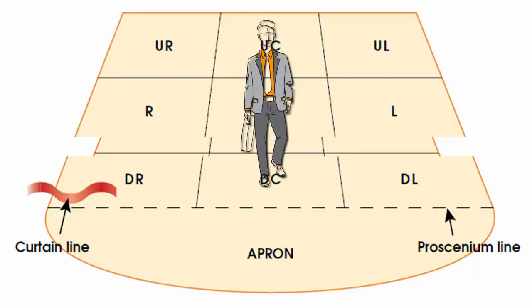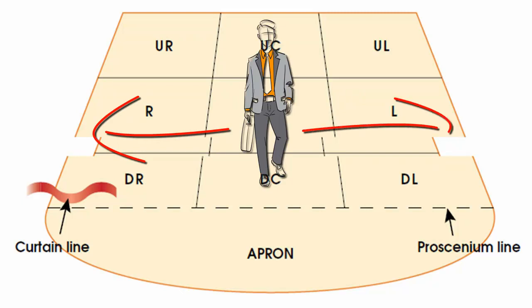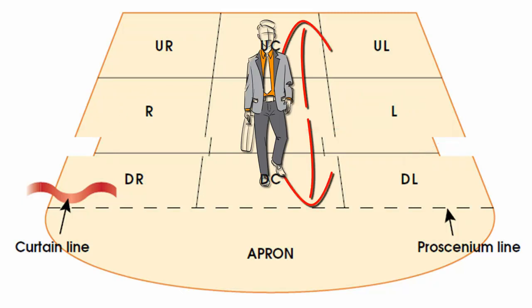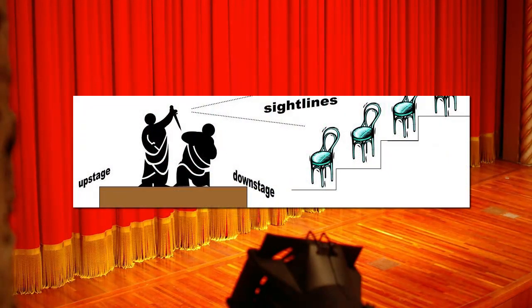Areas of the stage are named from the actor's point of view. If you are standing on stage looking out at the audience, stage right will be to your right and stage left to your left. Upstage is towards the back wall and downstage is closest to the audience. This terminology comes from the days when stages were raked or angled down towards the audience so that everyone standing on the ground could see. Now, theatre seating is usually raked instead.